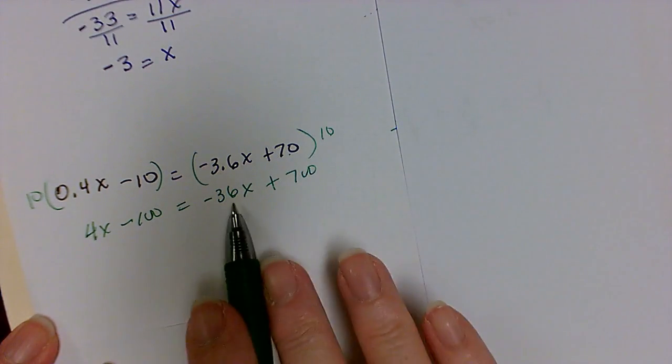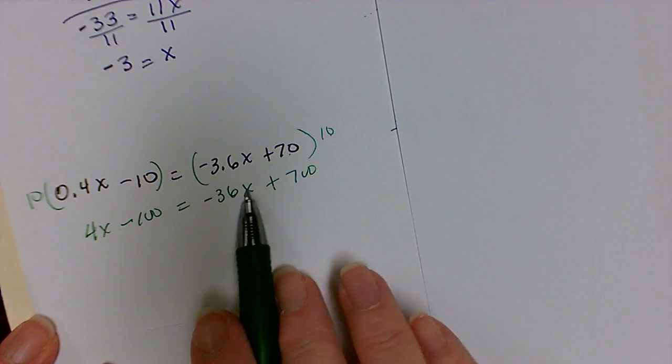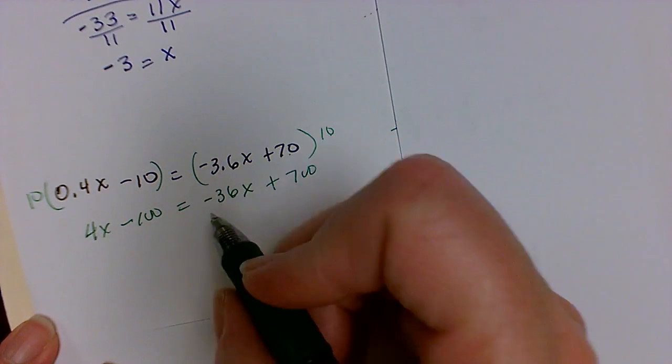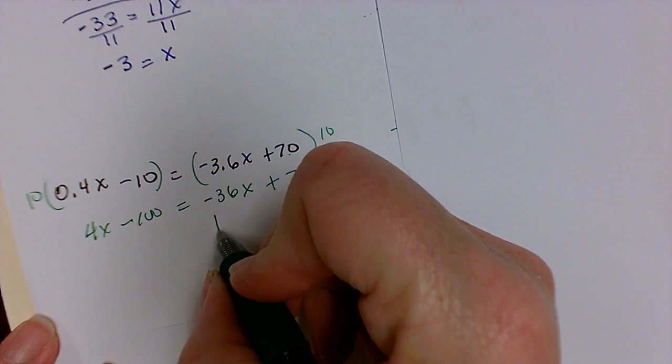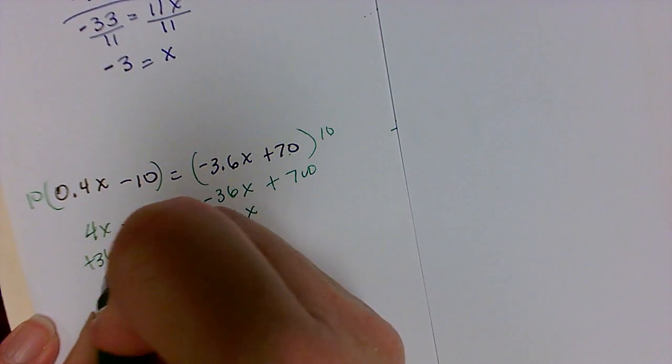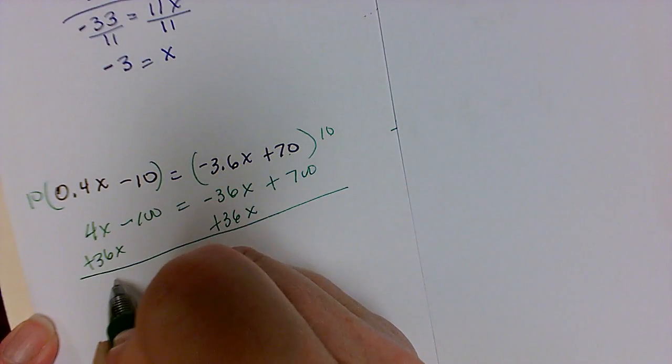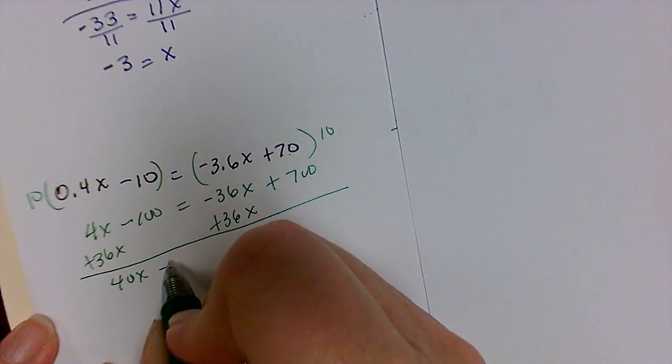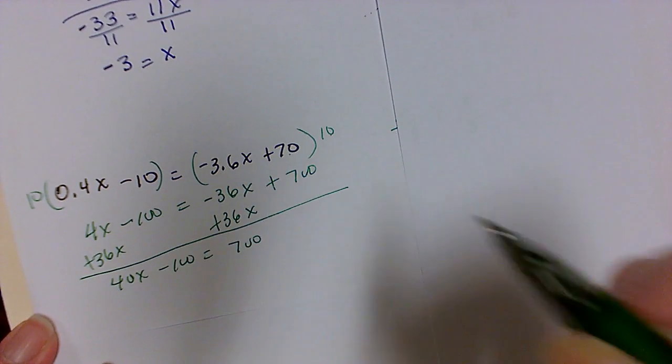So I will have negative 36x plus 70 times 10 is 700. Now I'm looking at my x terms again. And this side is negative. This side is positive. So I'm going to move this to the other side. So plus 36x to both sides.